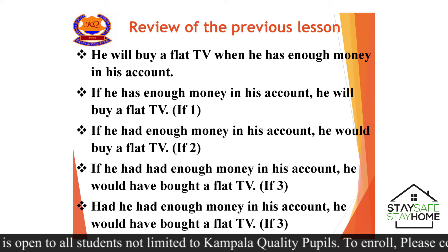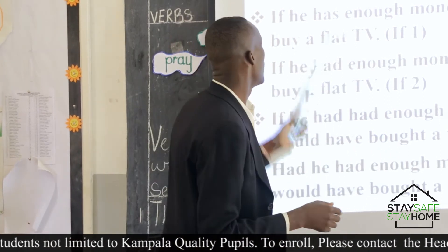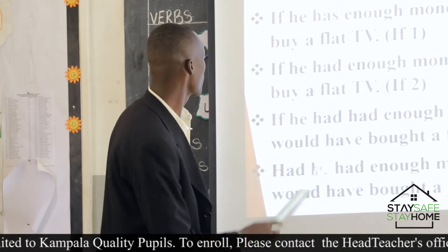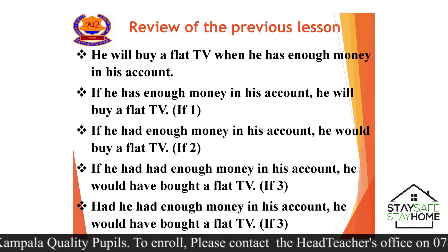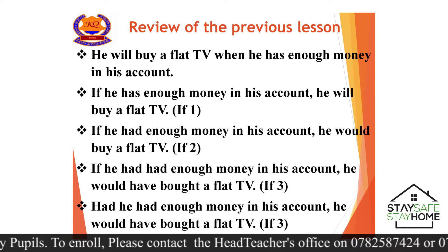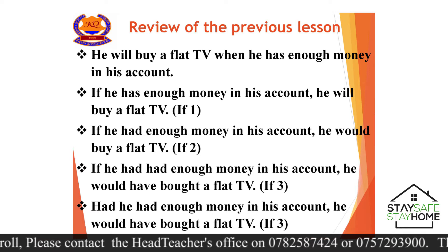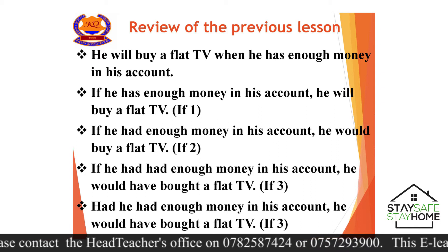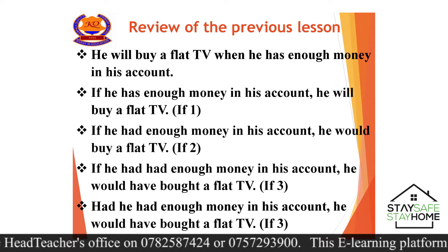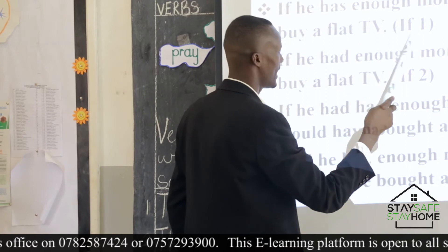When "if" is in the middle, we begin with the result and end with the condition, because the result goes with the main clause and the condition goes with the if clause. Now, if we use "if" in this sentence: "If he has enough money in his account, he will buy a flat TV." From "if" up to where the comma is, this is what we called the if clause last time — the conditional clause. From the comma, we said that is the result clause or the main clause. Because we see a present tense in the if clause and future simple in the main clause, we say this sentence is in if one.